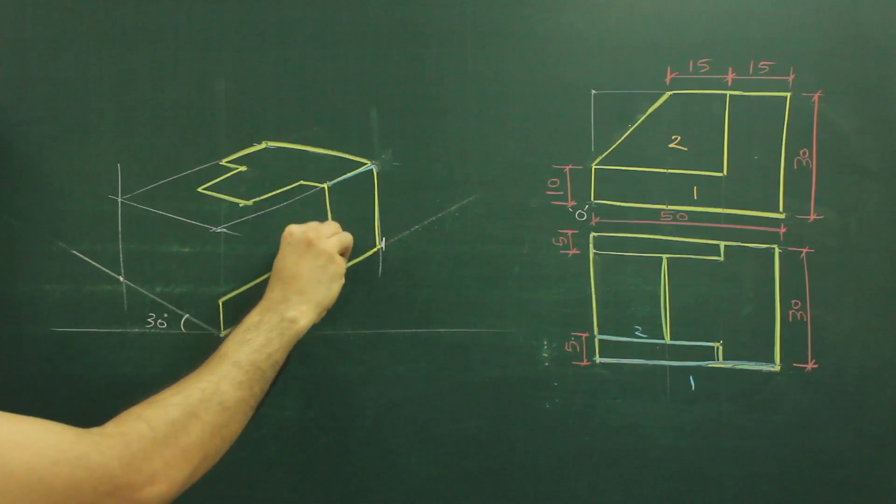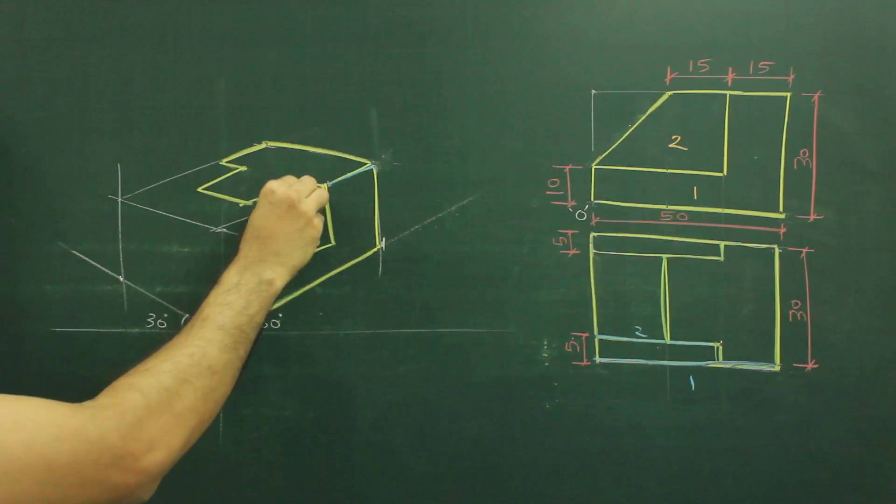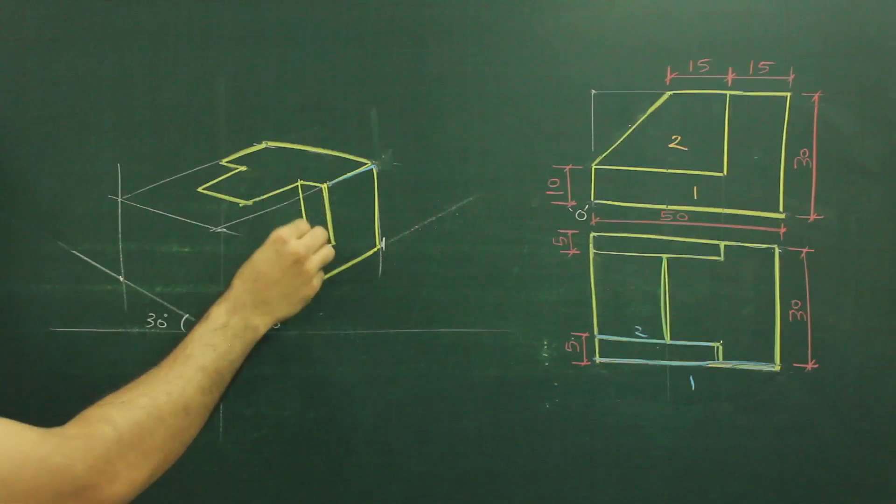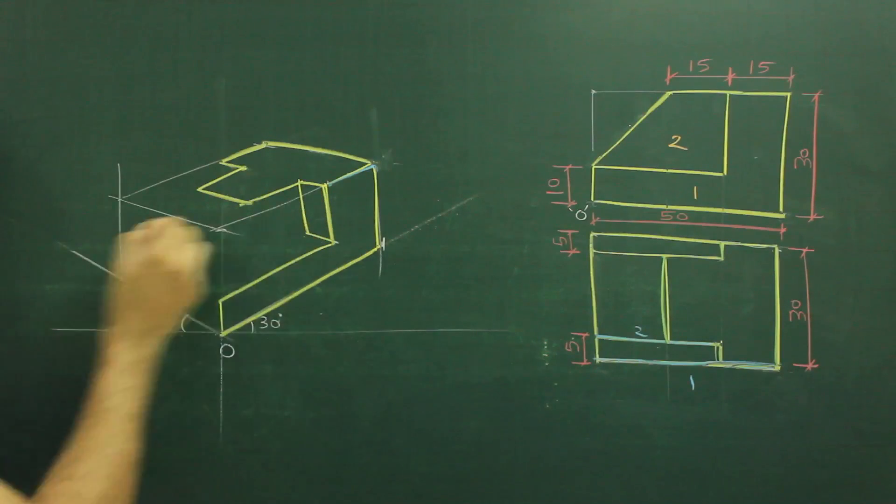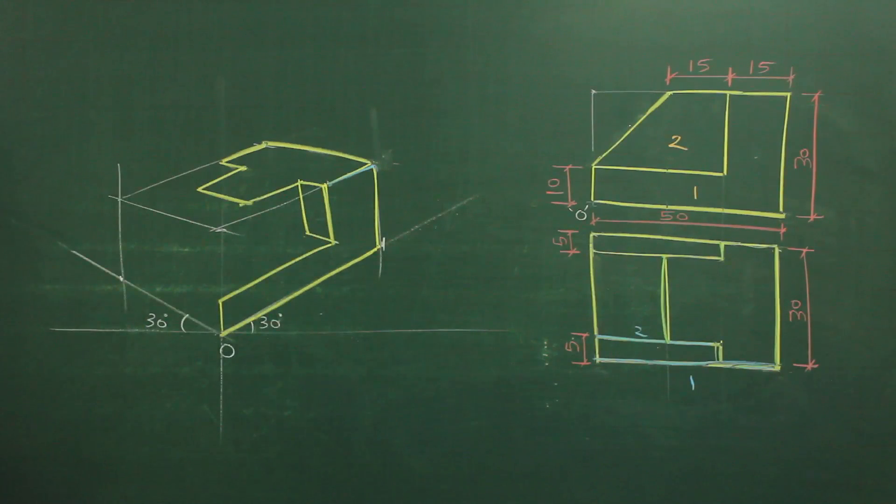Now what we can do? As we see in isometric, whatever is there in the front, the same thing is behind. So I can draw this line again 20 down behind and we can join this.